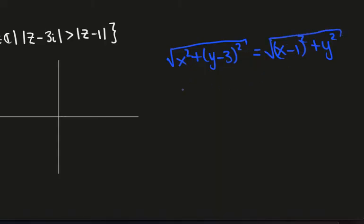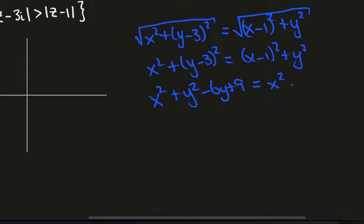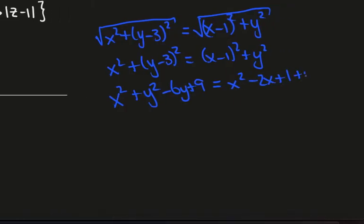Okay, so again square both sides. I'll get x squared plus (y minus 3) squared is (x minus 1) squared plus y squared. Expand these out. I'll get x squared plus y squared minus 6y plus 9, and that's equal to x squared minus 2x plus 1 plus y squared. Cancel the x squared, the y squared.